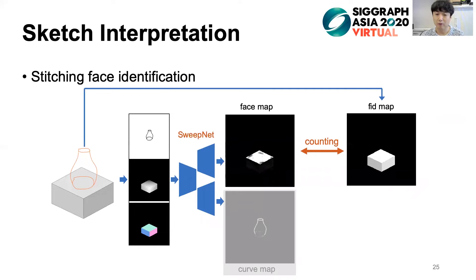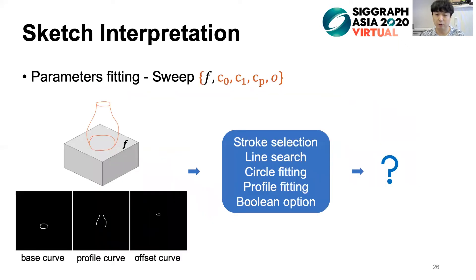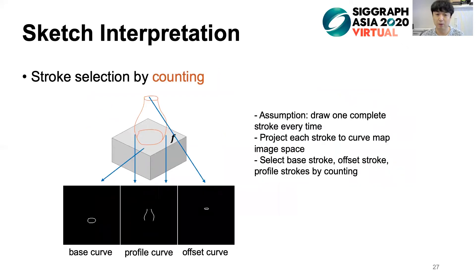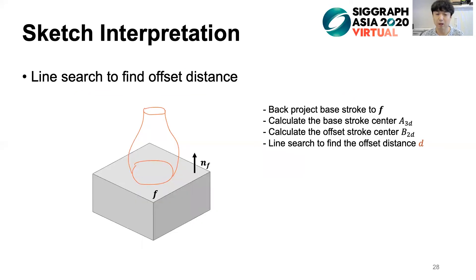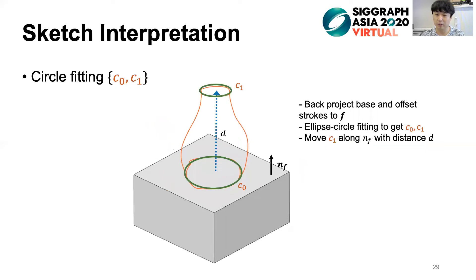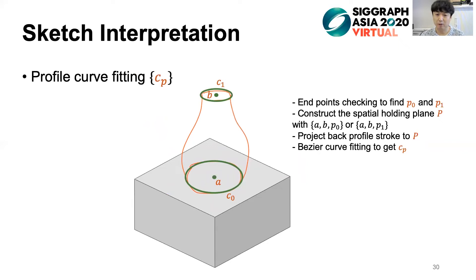With the predicted face map, we first identify the staging face by rendering the face index map of the current shape and finding the staging face index by overlap counting. Having the staging face f, the next step is to find the four remaining parameters. We divide the whole process into five steps. First, stroke selection by counting — we assume users draw each complete stroke at a time, project each stroke into the curve map space, and select the base, offset, and profile strokes by overlap counting. Then we use line search to find the offset distance of the offset circle, using the circle centers in the line search method. Next, we do circle fitting to find the exact circles in space. Having the base and offset circles, we find the cross-section plane to calculate the profile curve. For the Boolean operation, we use simple heuristic tracking or user selection.